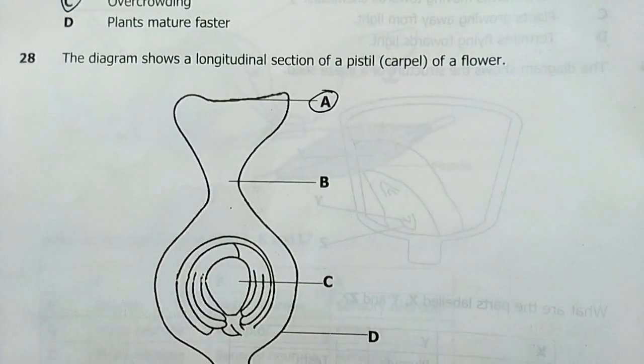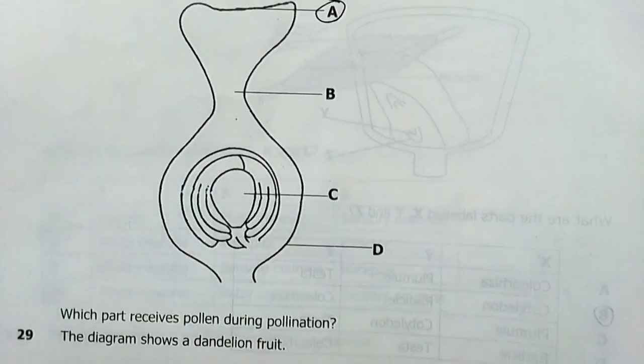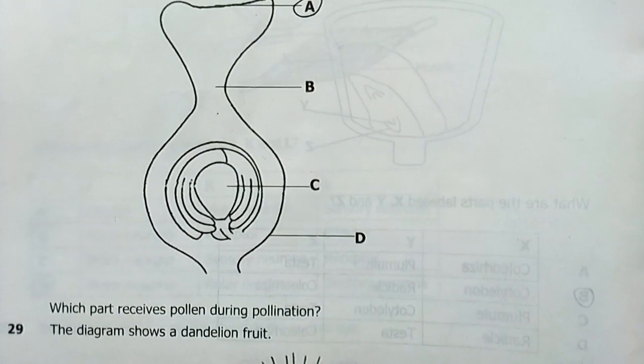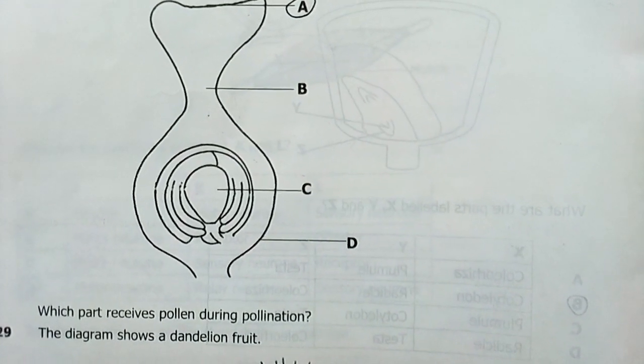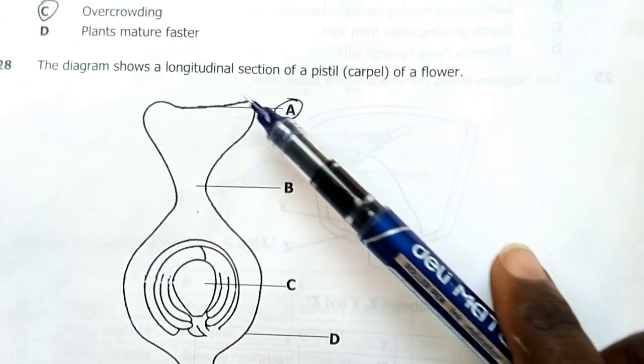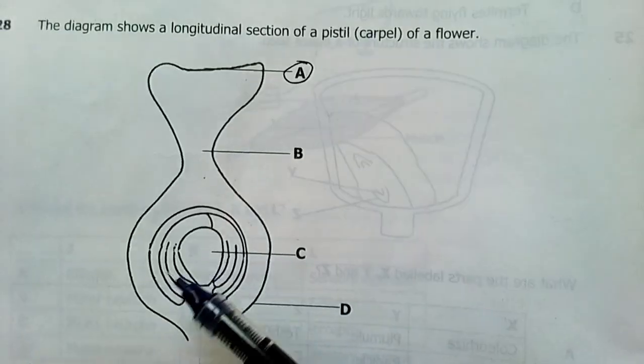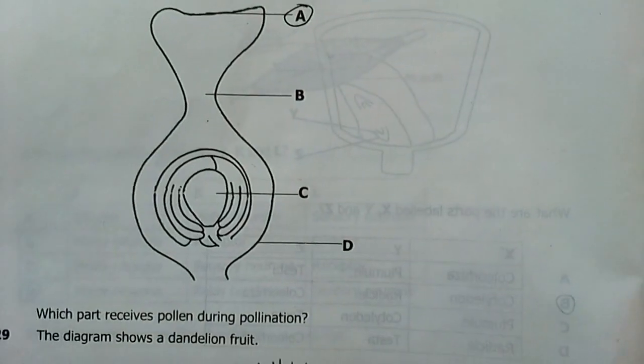28, the diagram shows a longitudinal section of a pistil or carpel of a flower. Which part receives pollen grains during pollination? A receives pollen. Then the pollen tends to dig, creating a pollen tube to the ovary. So, A is the one that receives the pollen.